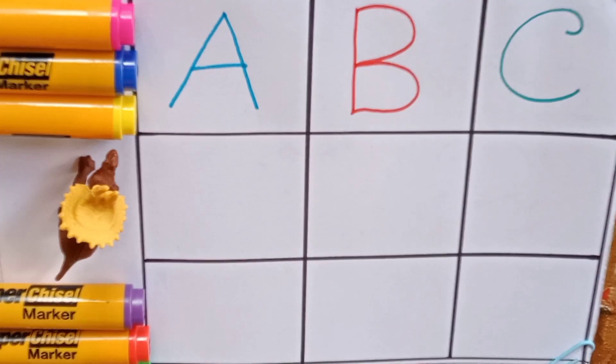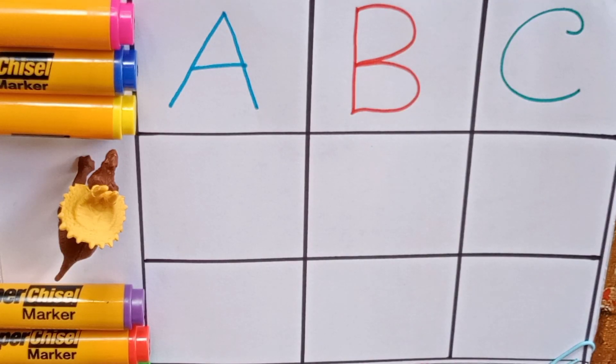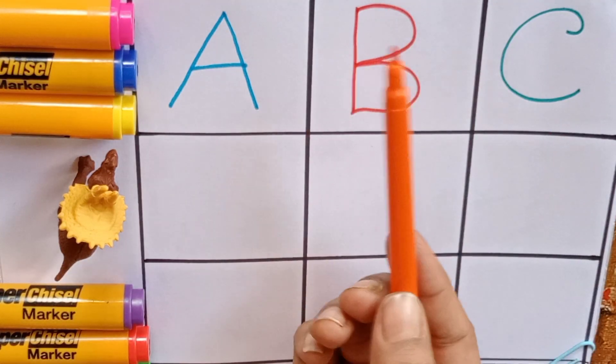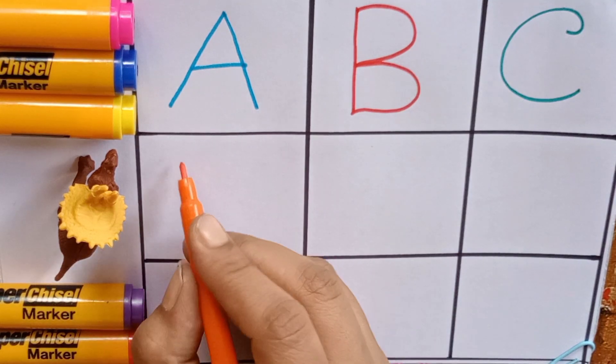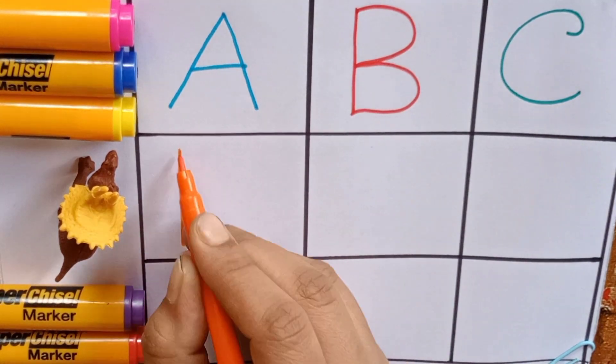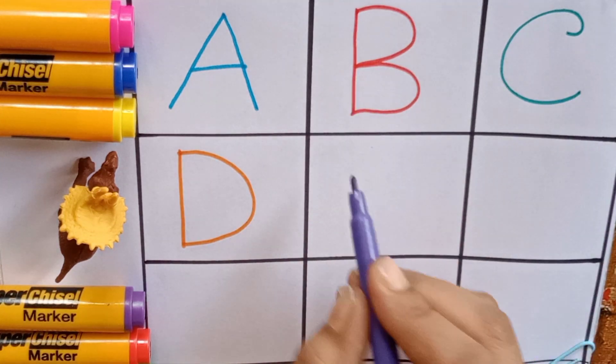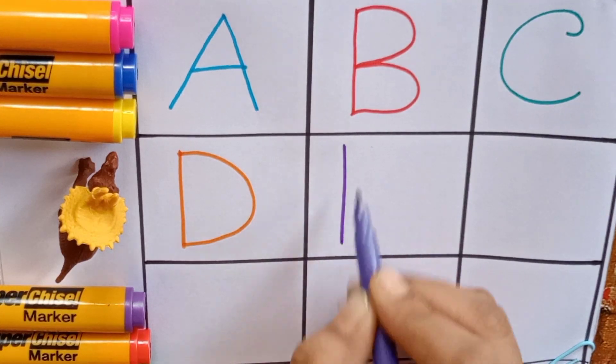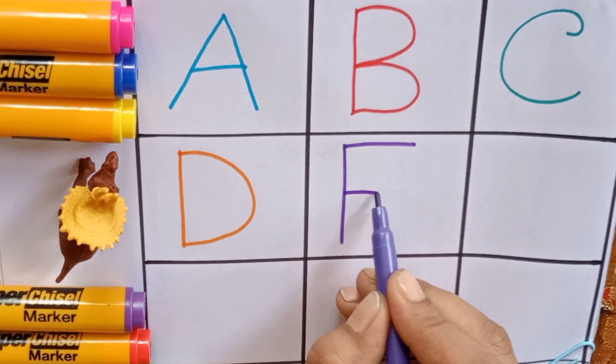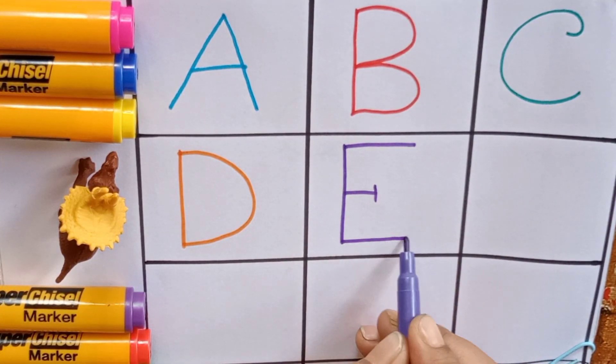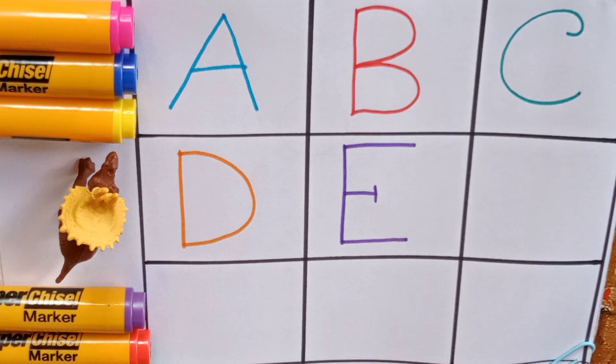Orange: D, D for deer, D for also dog. Purple: E, E for eagle, E for also eggplant. Pink.